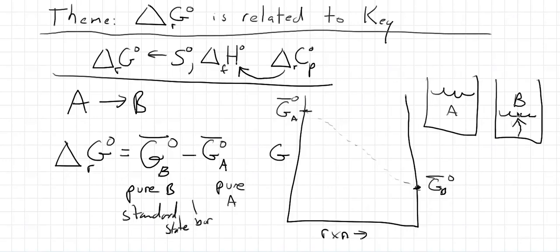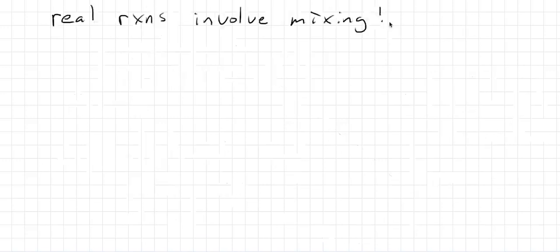What happens is the reactant starts forming the product in the same beaker, and they're going to mix. And this is going to affect the thermodynamics. So, real reactions involve mixing, and the consequence of that is going to be that real reactions involve an equilibrium.